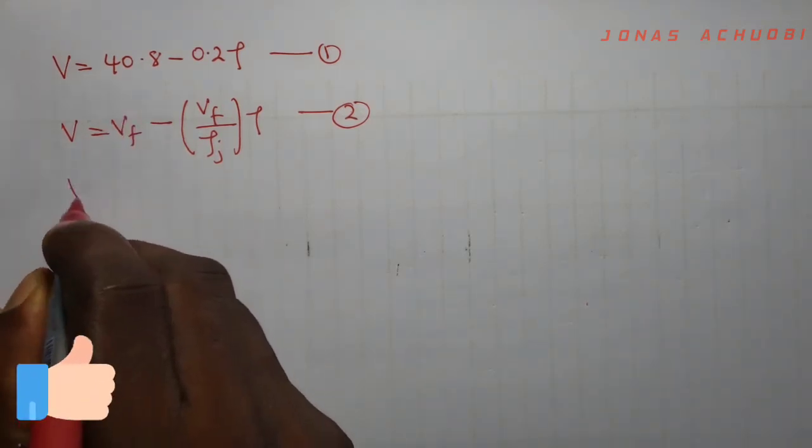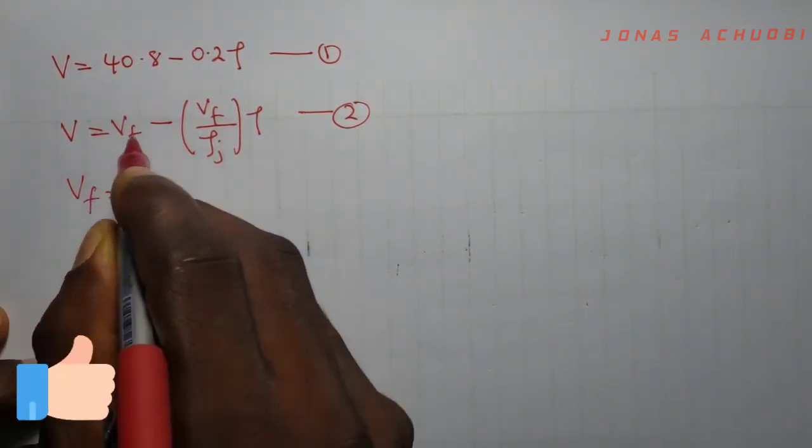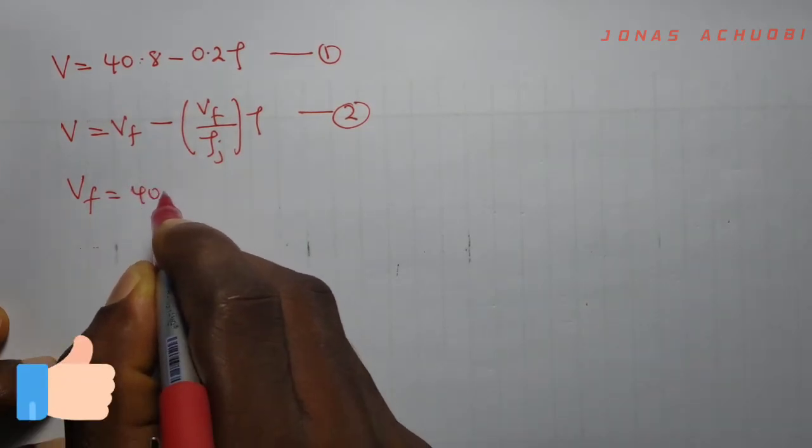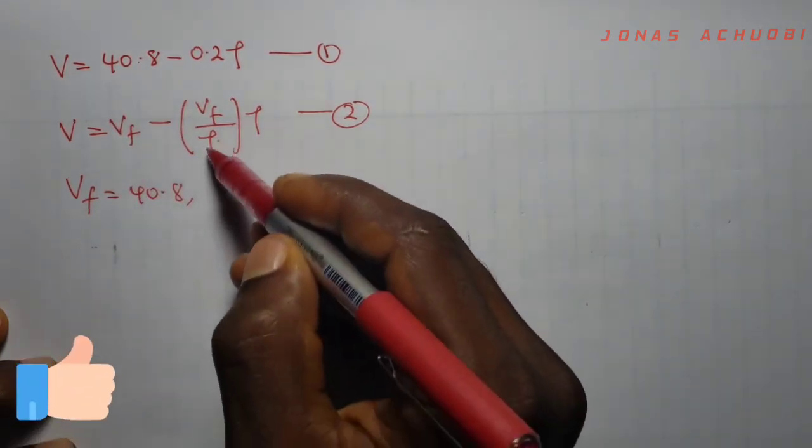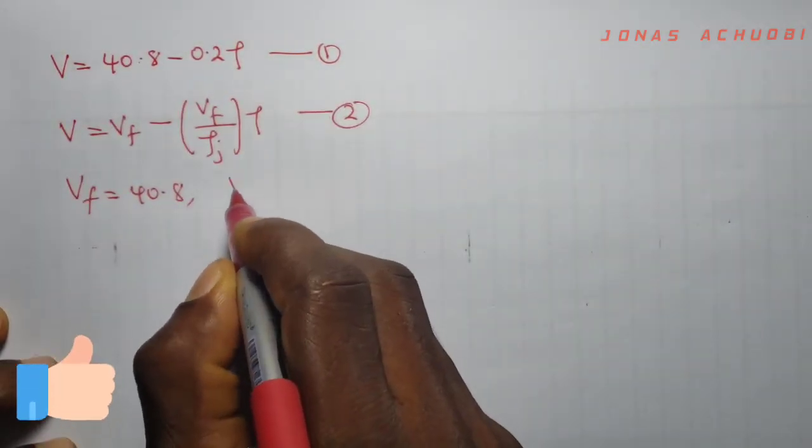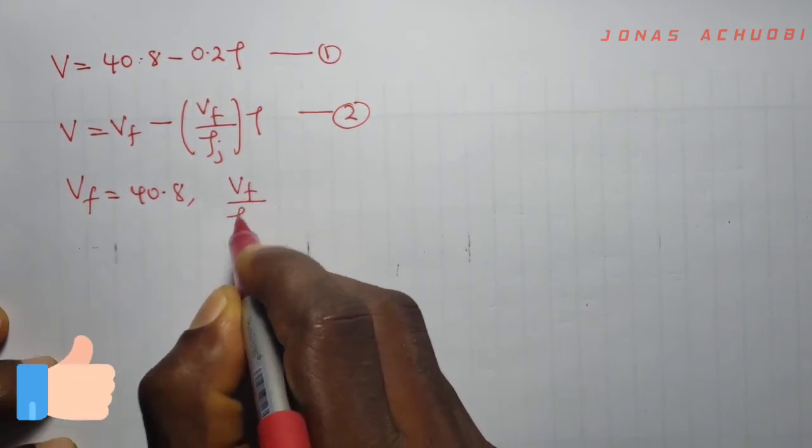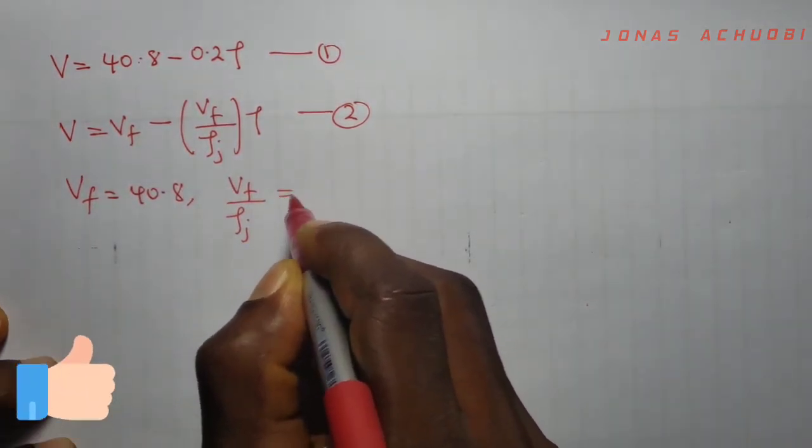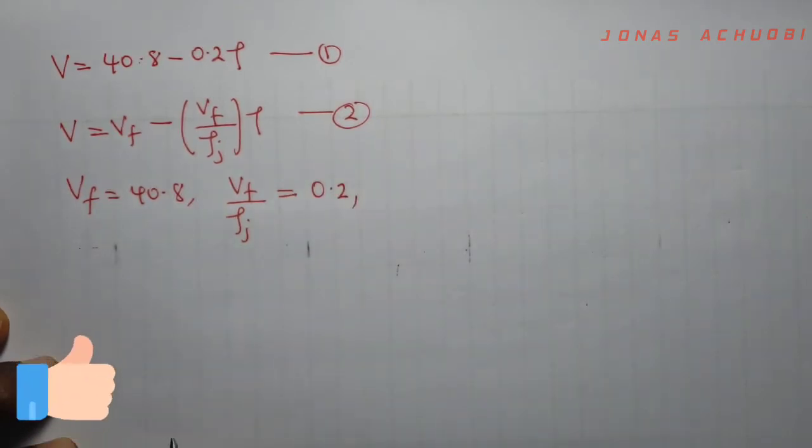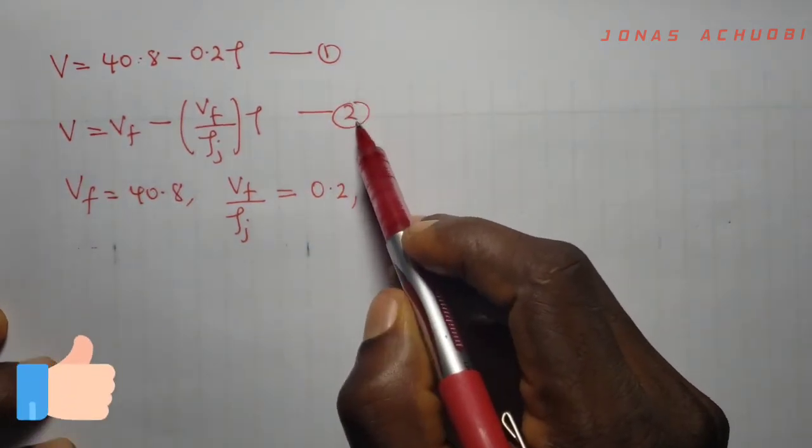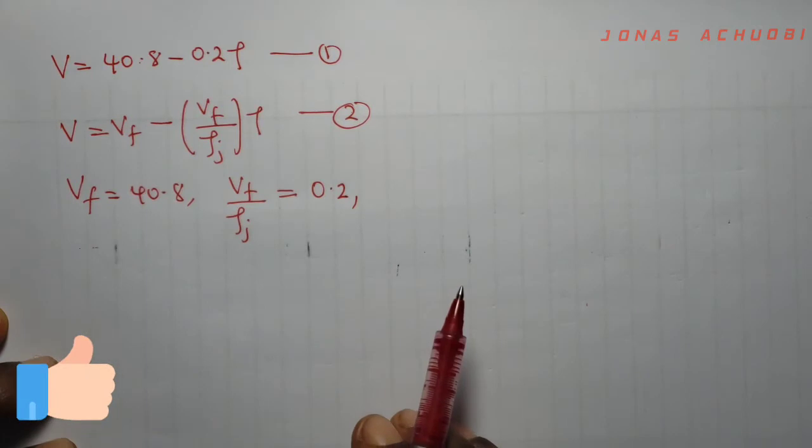To answer the questions that follow, we now compare our fitted line equation 1 with the Green Shields model as follows. Vf from here comparing 1 and 2, Vf is equal to 40.8. And comparing this, you see that Vf over rho jam is equal to 0.2. So we've compared 1 and 2 and we have these parameters obtained.